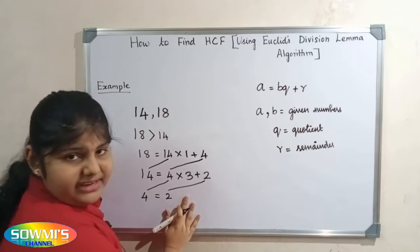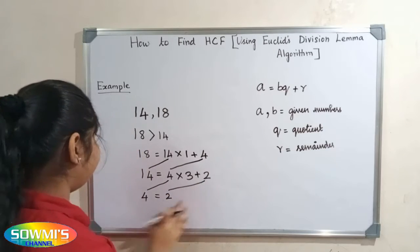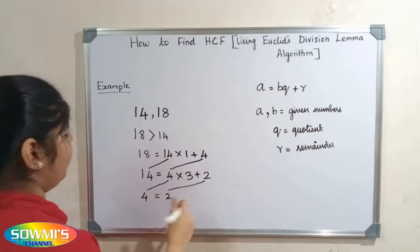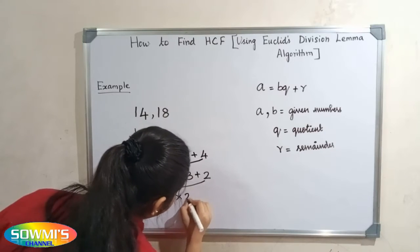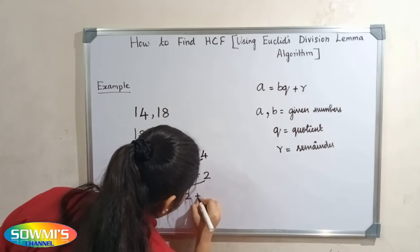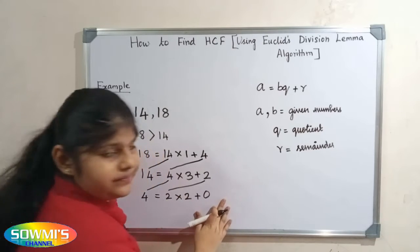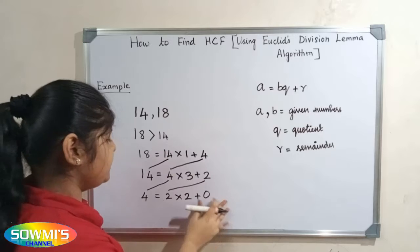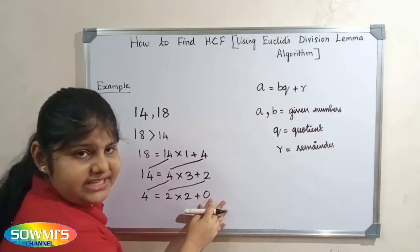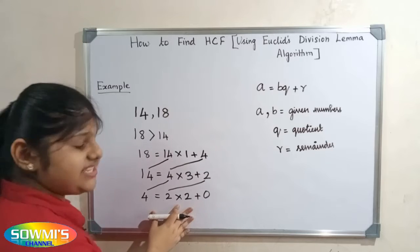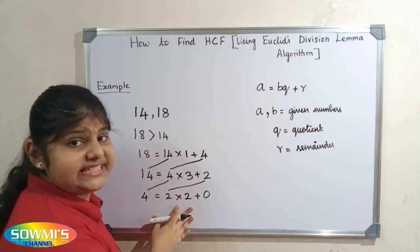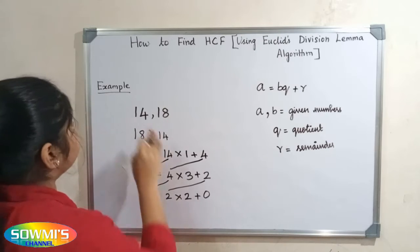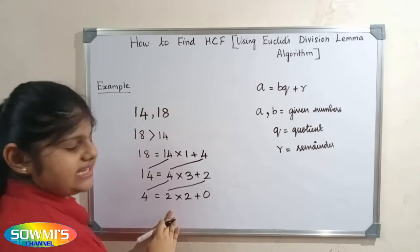Now we have to divide 4 by 2. When we divide 4 by 2, our quotient will be 2 and our remainder will be 0. We end the process here because the remainder is 0. The divisor at this point is the HCF, so the HCF of 14 and 18 is 2.